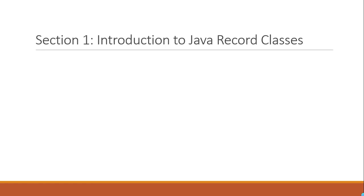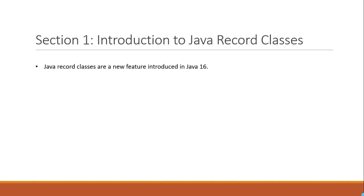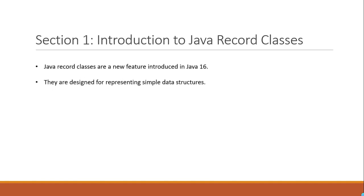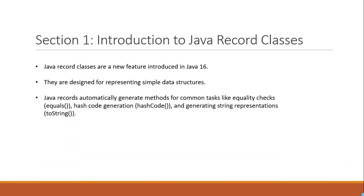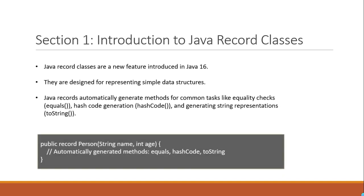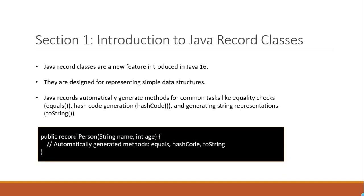Section 1: Introduction to Java Record Classes. Java Record Classes are a new feature introduced in Java 16. They are designed for representing simple data structures. Java records automatically generate methods for common tasks like equality checks (equals), hash code generation (hashCode), and generating string representations (toString). This reduces the amount of boilerplate code developers need to write for data classes.